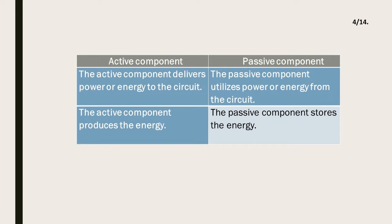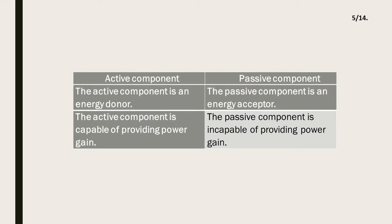Active Components and Passive Components. The active component delivers power or energy to the circuit, while the passive component utilizes power or energy from the circuit. The active component produces the energy, whereas the passive component stores the energy. The active component is an energy donor; the passive component is an energy acceptor.